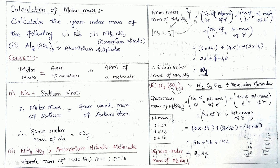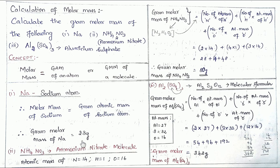Look at the first case: sodium (Na) is an atom, not a molecule. So for an atom, the gram atomic mass is the molar mass. The gram atomic mass of sodium is 23 grams, which is the gram molar mass of sodium. So we write it as 23 grams.